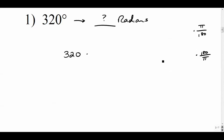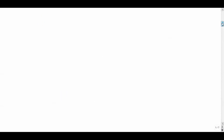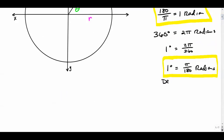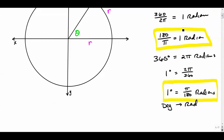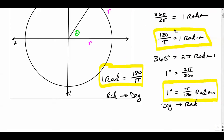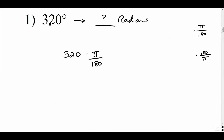Here's the rule to memorize: going from degrees to radians, multiply by pi over 180. Going from radians to degrees, multiply by 180 over pi. Those are the two conversion factors you want to memorize. So for our first example, converting 320 degrees to radians, we multiply 320 by pi over 180.